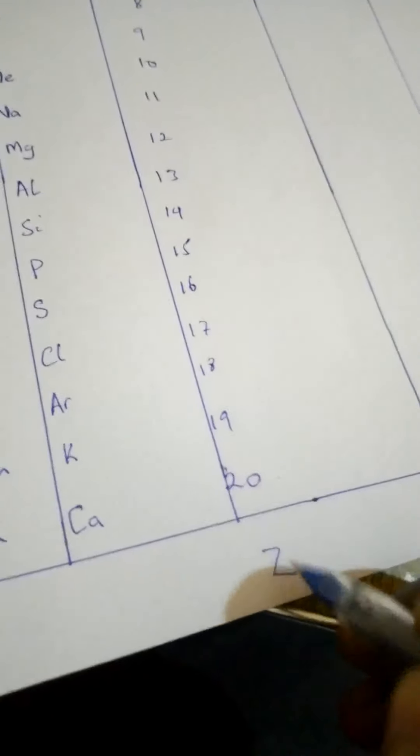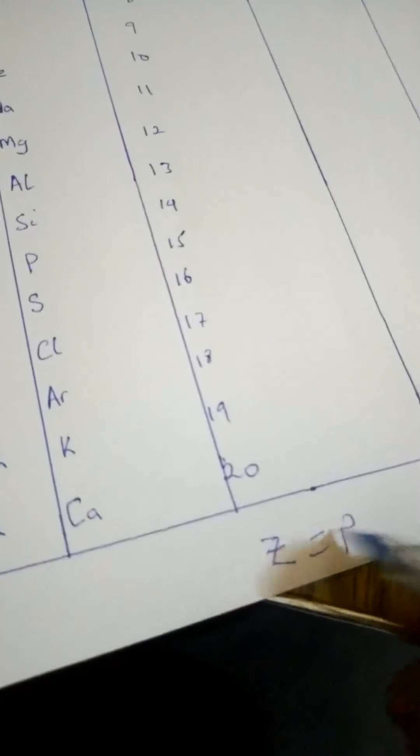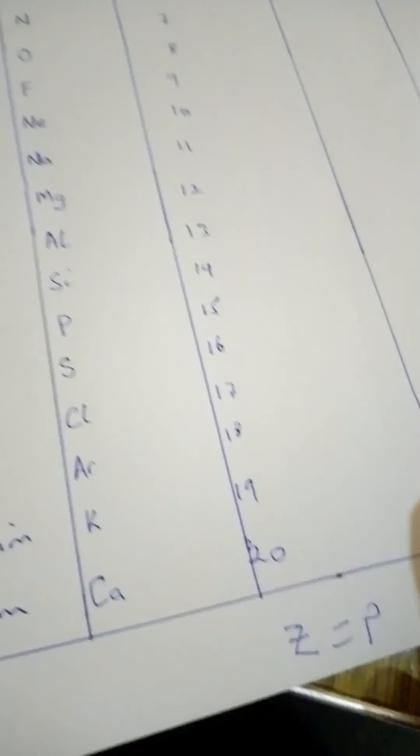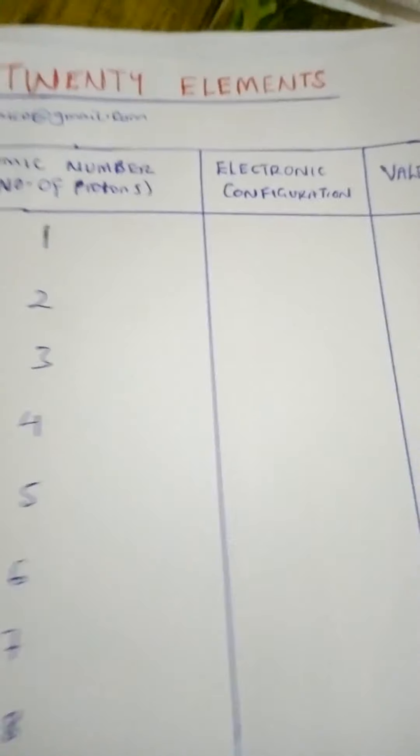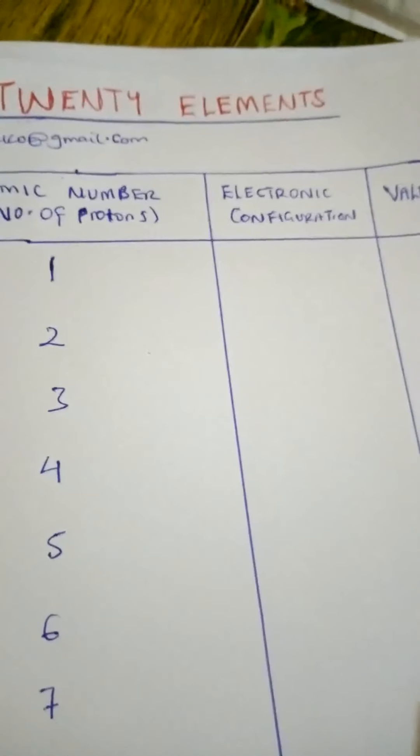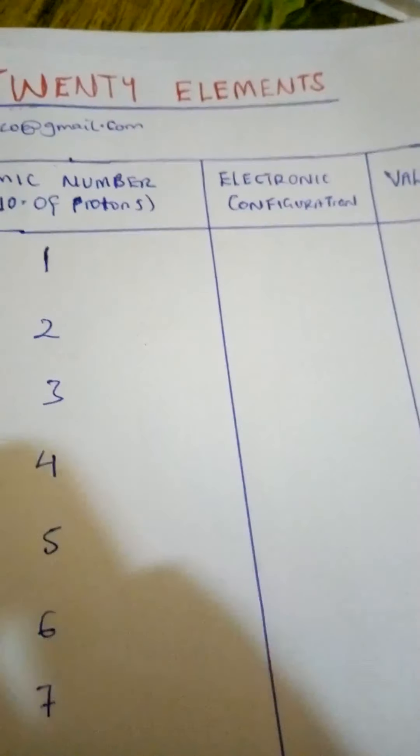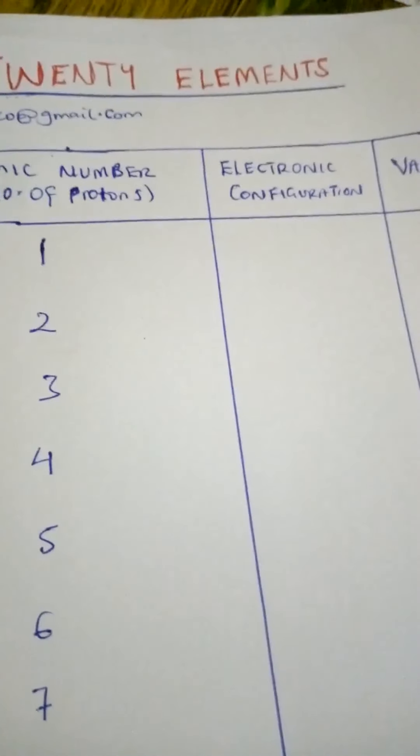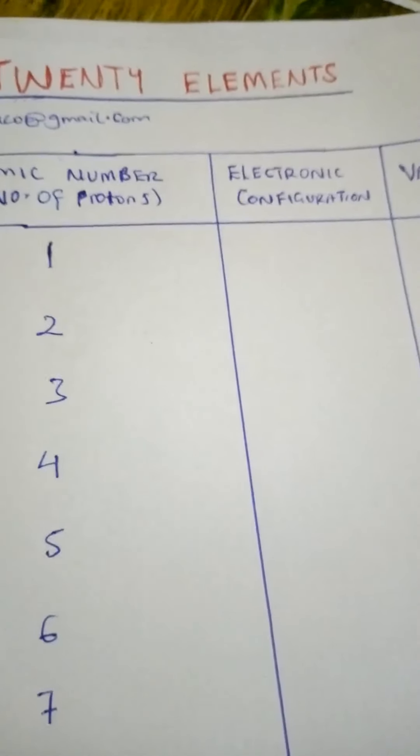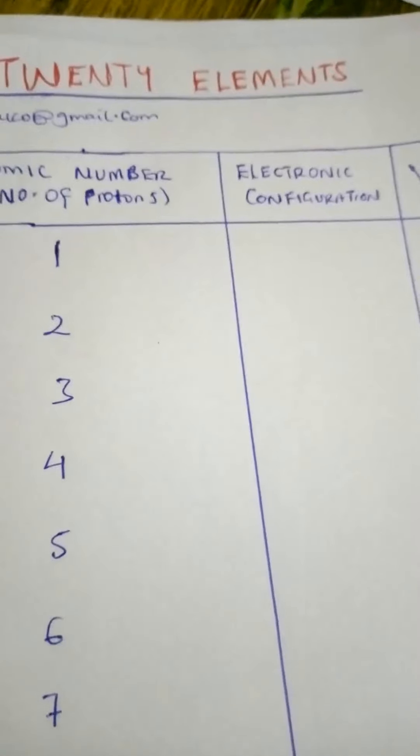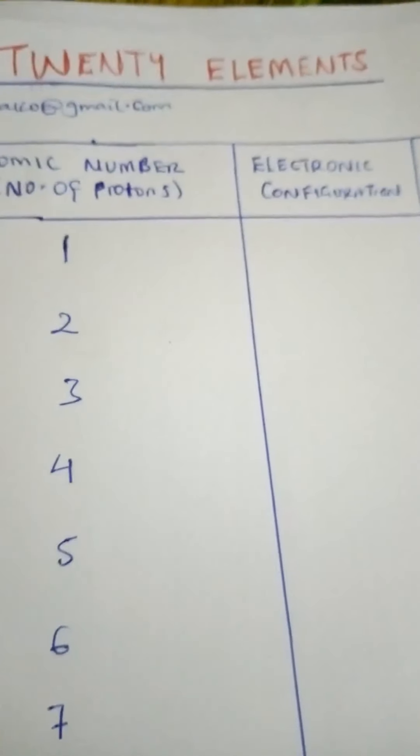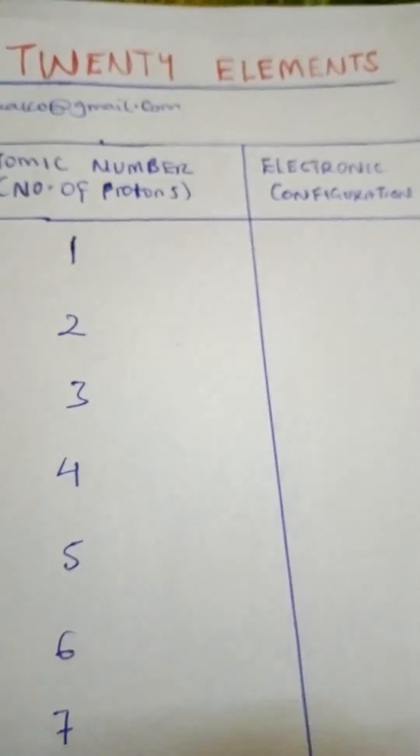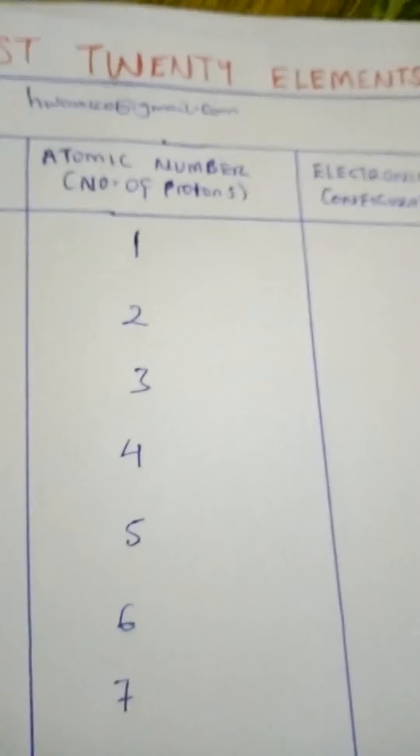So we say calcium has 20 protons and hence atomic number 20. Atomic number Z is the same as the number of protons. Never be confused by anyone. Hope that one is very simple. Now members, we go to our second column, electronic configuration. The arrangement of these electrons in the energy levels, you have to know that the first energy level will always take a maximum of two. They can never go beyond two. And the second energy level will always take a maximum of eight.